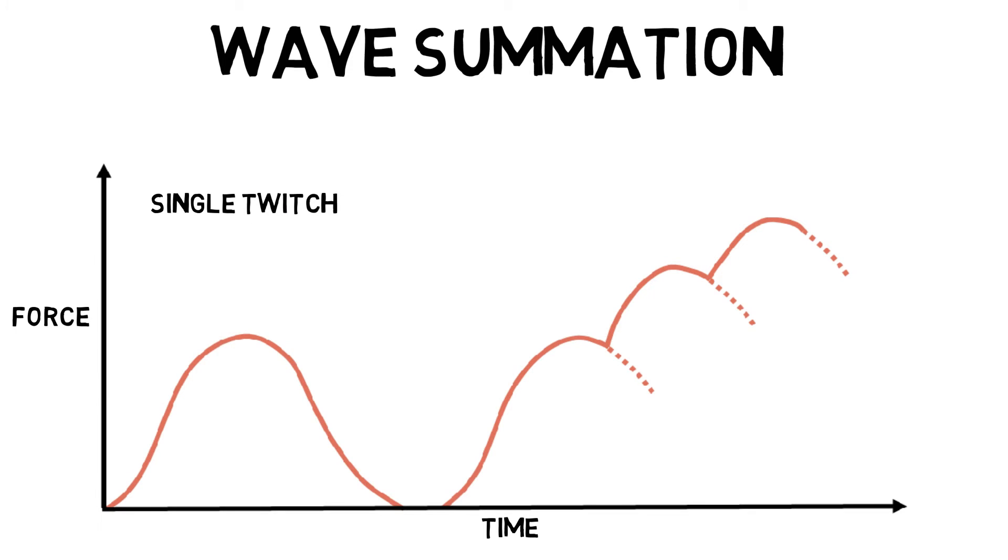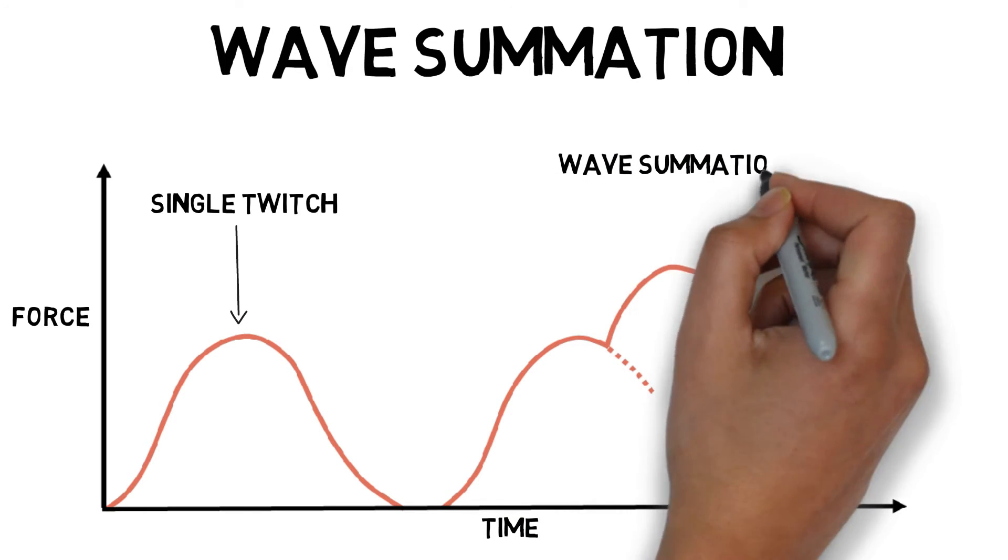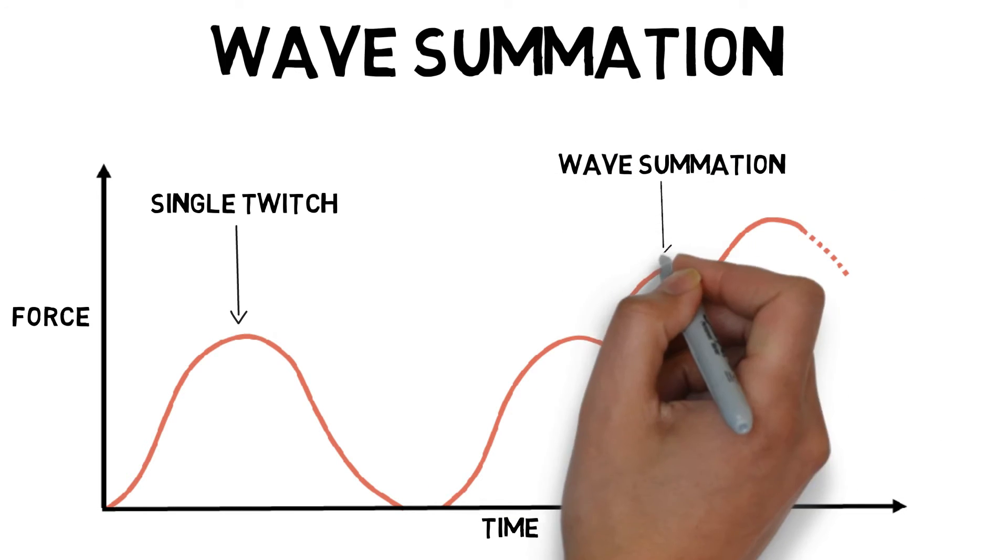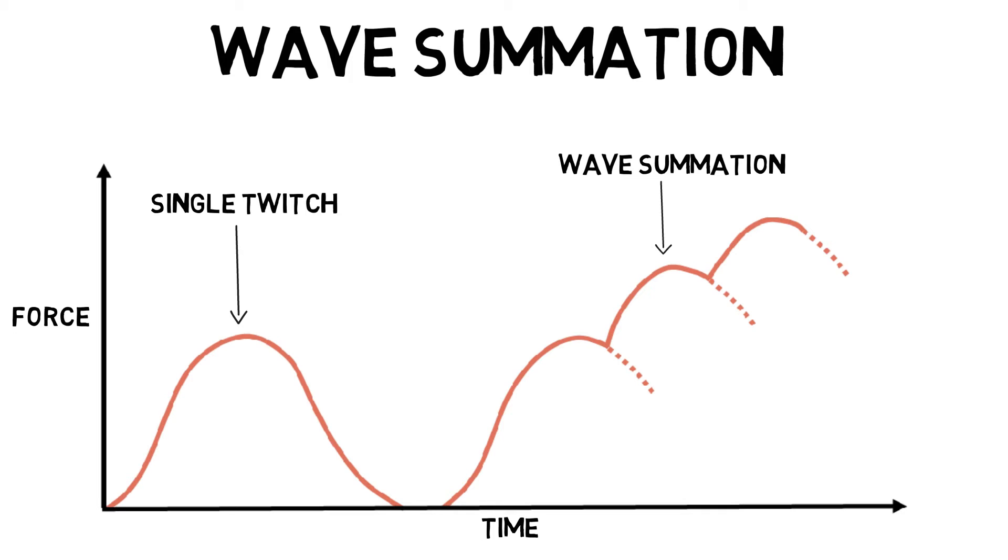In isolation, a single muscle twitch cannot produce a great amount of force. Wave summation is an increase in muscle contraction strength based on how rapidly a muscle is stimulated. Muscles that are repeatedly stimulated are not able to relax between repetitive stimulations, which creates strong contractions due to the effect of each wave being added to the previous one.